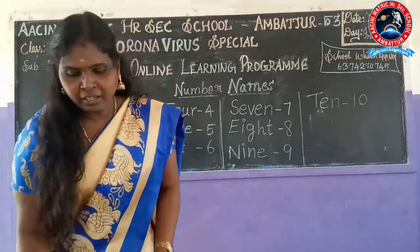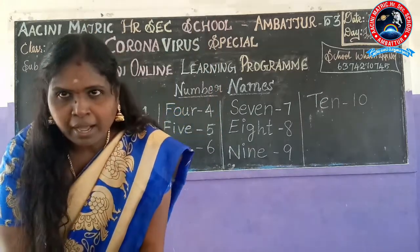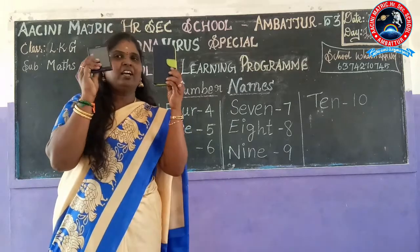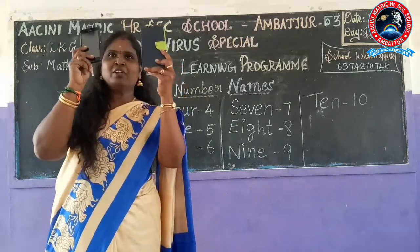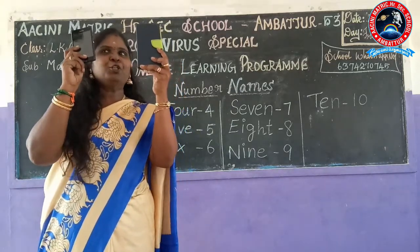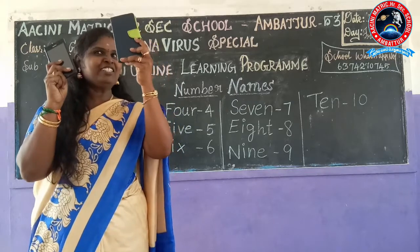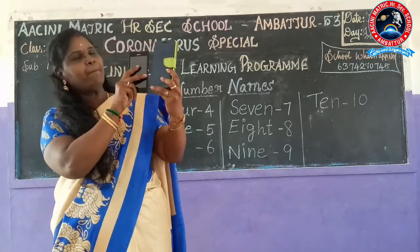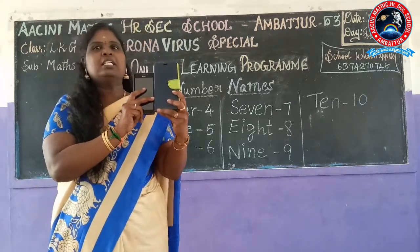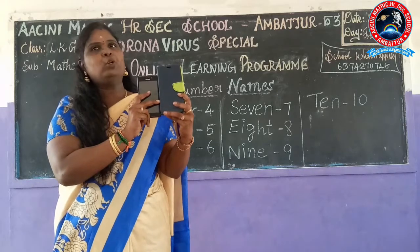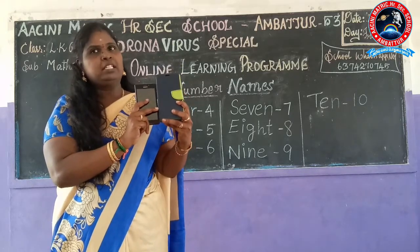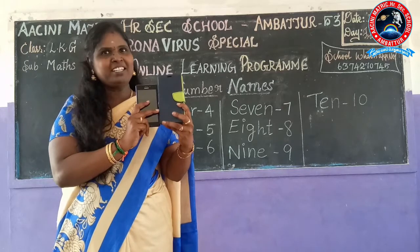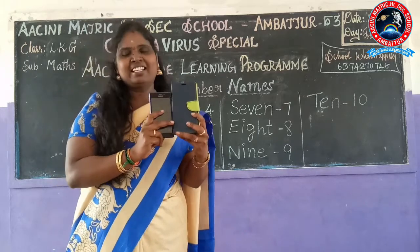Now I am going to show the mobiles. How many mobiles do I have? 1 and 2 — 2 mobiles. Spell it: T-W-O, 2. Repeat: T-W-O, 2.